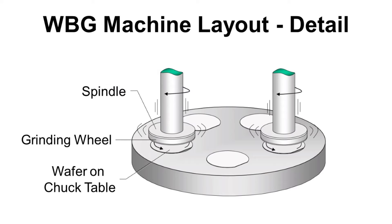If you take a closer look, we can see the wafer on the chuck table. Over the chuck table, there is a spindle. At the bottom of the spindle, the grinding wheel is located. During the wafer backgrinding process, the spindle moves downward with rotation, and the chuck table is rotating at the same time. So spindle rotation, spindle down feed, and chuck table rotation are all in action simultaneously.